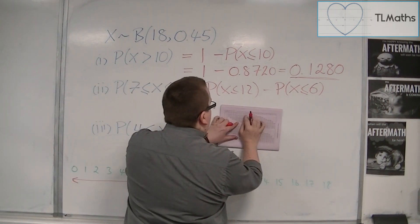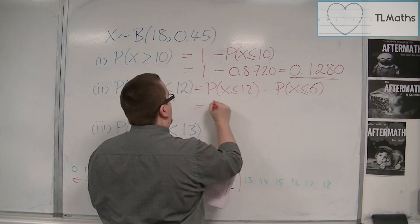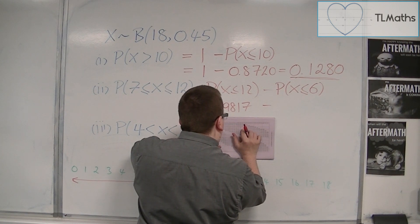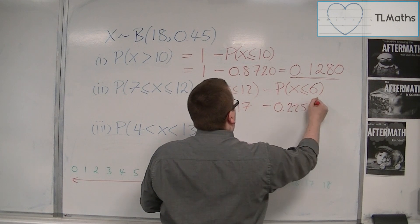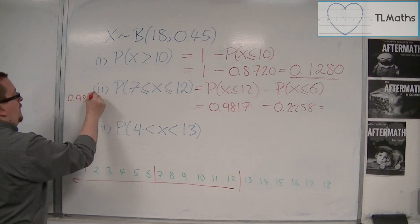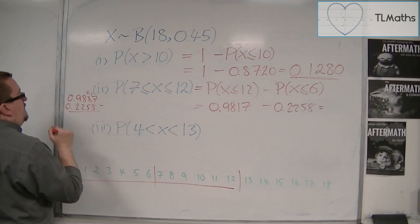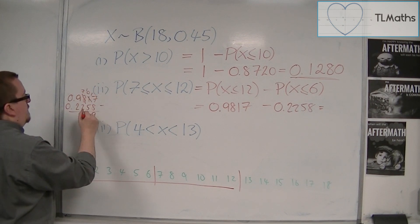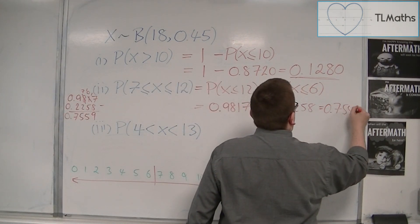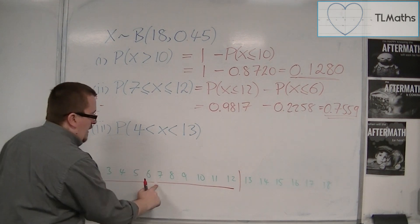So x is less than or equal to 12, reading off from the tables, that's 0.9817. And less than or equal to 6, that would be 0.2258. So 0.9817 take away 0.2258. So that's 17 take away, so 9, 7, 10, 5, 5, 7, so 0.7559. And that's the probability that I want. Let's get rid of those red lines again.